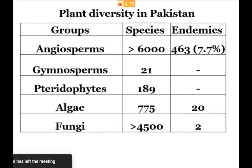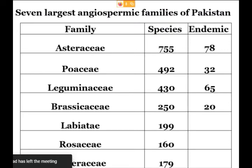Overall, Pakistan has over 6,000 plant species, of which 23 are endemic, representing 7.7% of the total flora. There are 21 angiosperm endemic species, 189 pteridophytes (ferns), 775 algae with 20 endemic species, and 4,500 fungi species with 2 endemic. Angiosperms, known as flowering plants, are represented by seven largest families distributing the flora with a variety of endemic species.